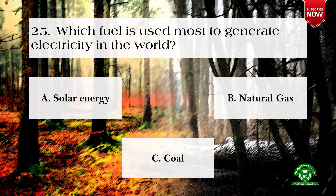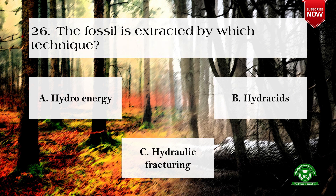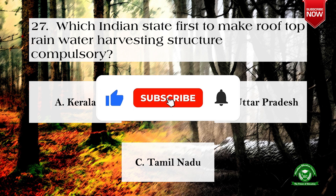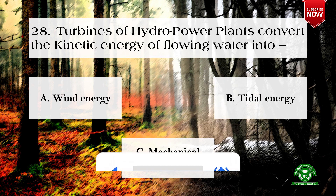Next question: which fuel is used most to generate electricity in the world? Options are: solar energy, natural gas, and coal. The correct option is c) coal. Next question: fossil fuel is extracted by which technique? Options are: hydro energy, hydrazides, hydraulic fracturing. The correct option is c) hydraulic fracturing. Next question: which Indian state was first to make rooftop rainwater harvesting structures compulsory? Options are: Kerala, Uttar Pradesh, and Tamil Nadu. The right option is c) Tamil Nadu.